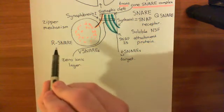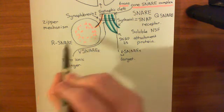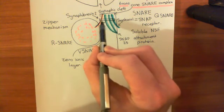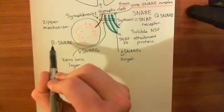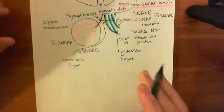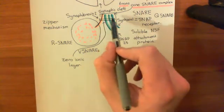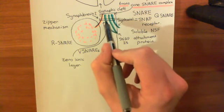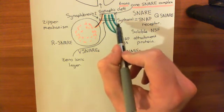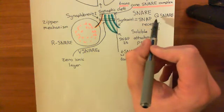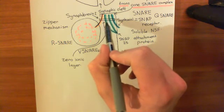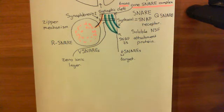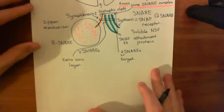The reason synaptobrevin is called an R-SNARE is because the amino acid it contributes into this zero ionic layer is an arginine, the single letter amino acid code for which is R. Whereas the other two SNARE proteins, SNAP-25 and syntaxin 1, they all contribute Q, glutamine. And SNAP-25 has two alpha helices, so both of the alpha helices of SNAP-25 contribute glutamine into this zero ionic layer.